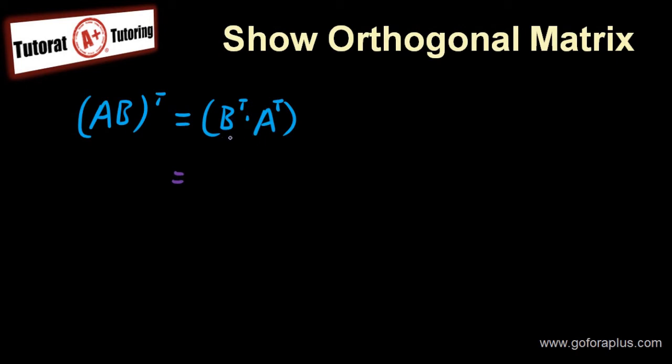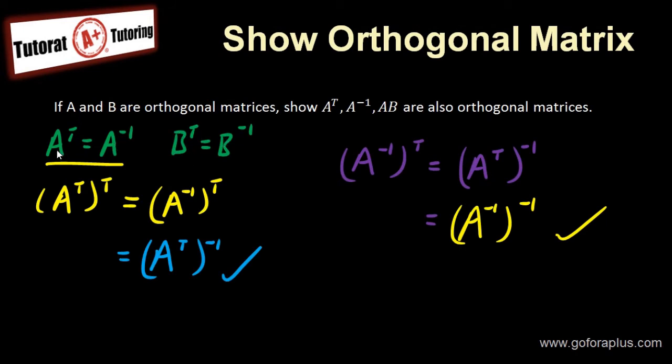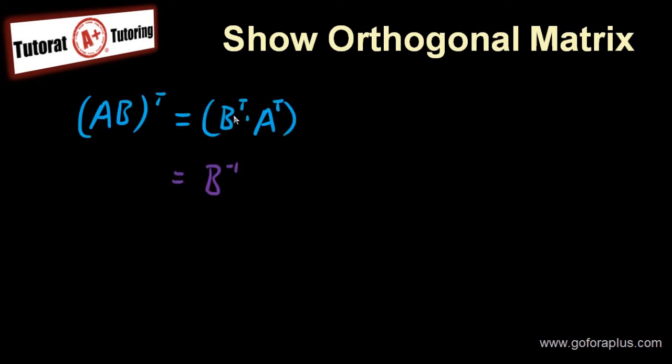Now, what is B transpose? B transpose is B minus one, because this is basically what we have here as what is given to us. So B transpose is B inverse. A transpose is A inverse.